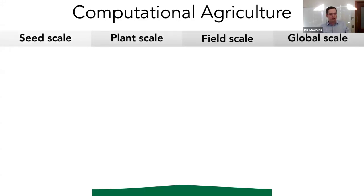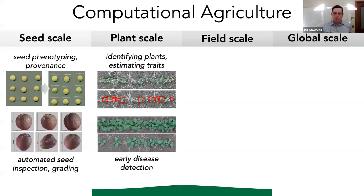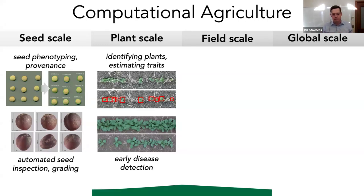The potential of computational agriculture extends across all different physical scales. At the level of individual seeds, we can do computation to phenotype seeds, predict their health or germination rate, and do things like automatic seed inspection and grading. At the scale of individual plants, we're typically estimating physical characteristics or traits, doing disease detection or pathology — traditionally in the space of plant breeding and small plot experiments.